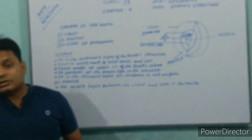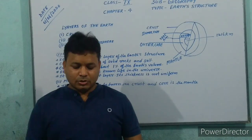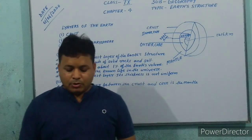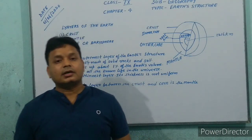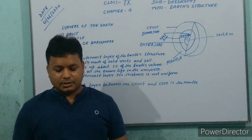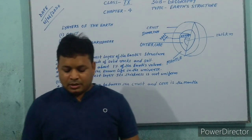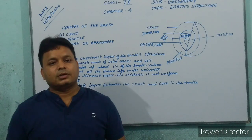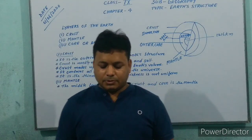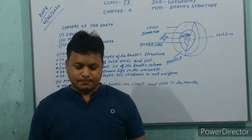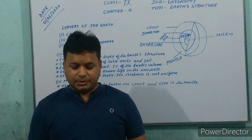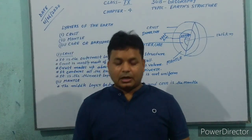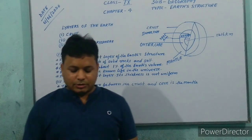Mohorovičić discontinuity is the boundary separating the crust and mantle. It was named after Andrija Mohorovičić, who was a Yugoslavian scientist who discovered this discontinuity. The depth of this boundary is not uniform — it is about 8 km under the ocean and about 32 km beneath the continents. The chemical composition of this boundary is different from the two layers above and below it, so characteristics of both the crust and mantle are found here.